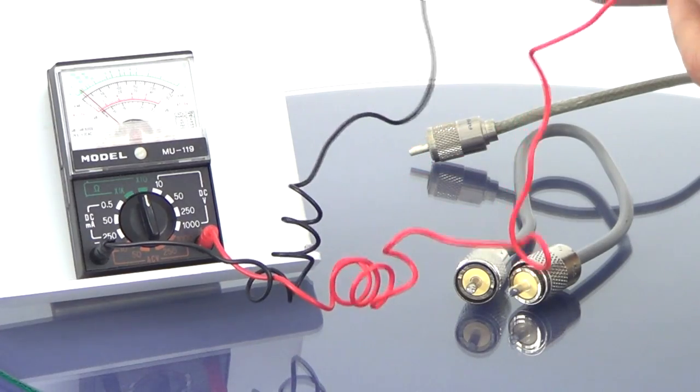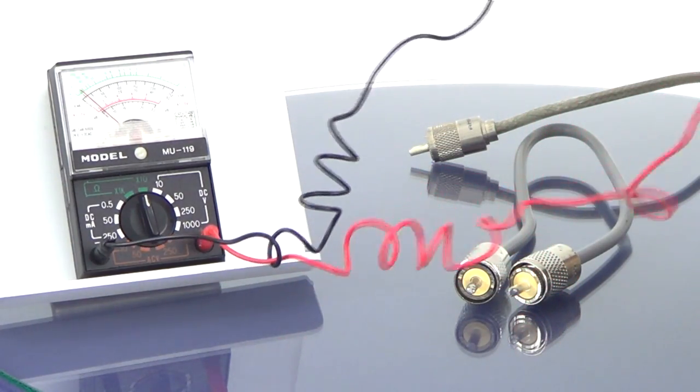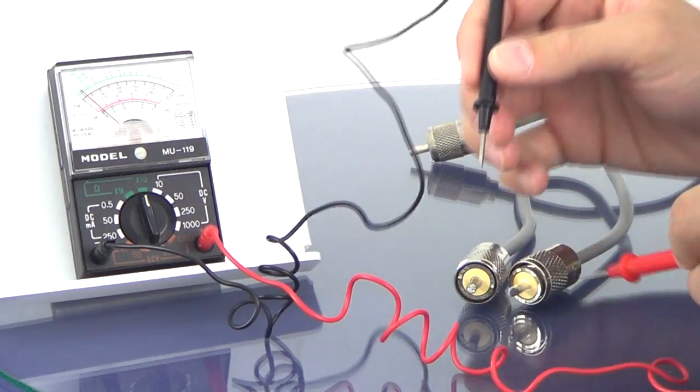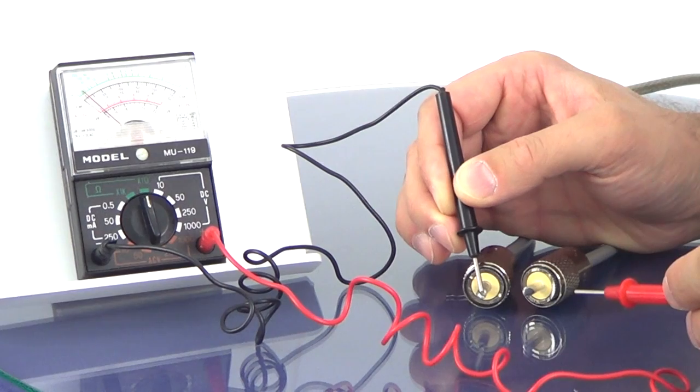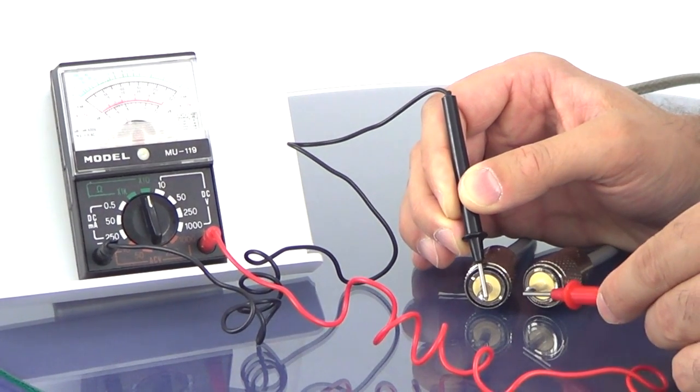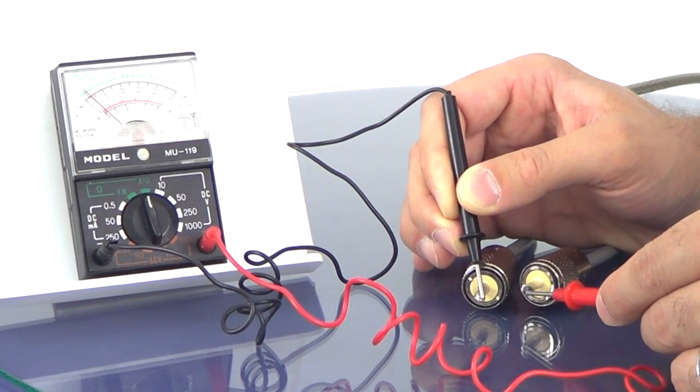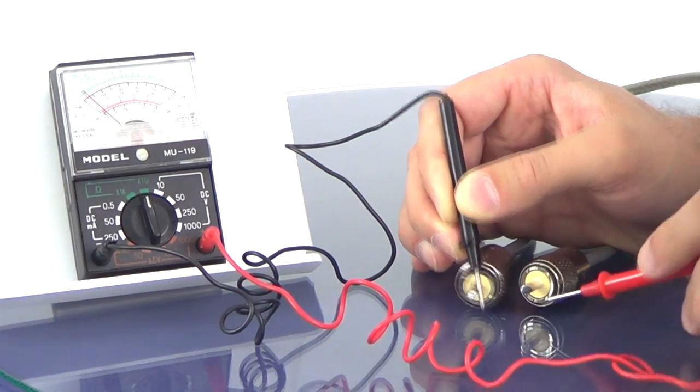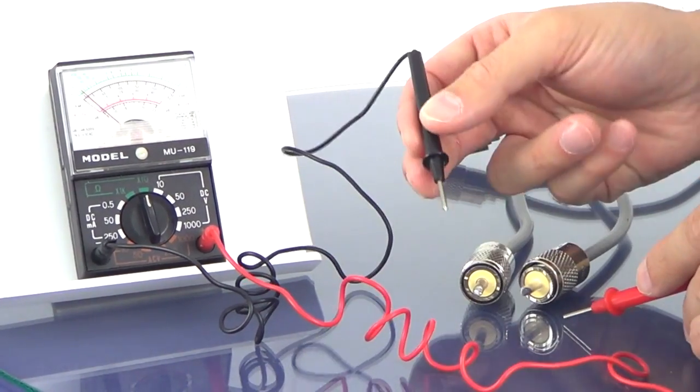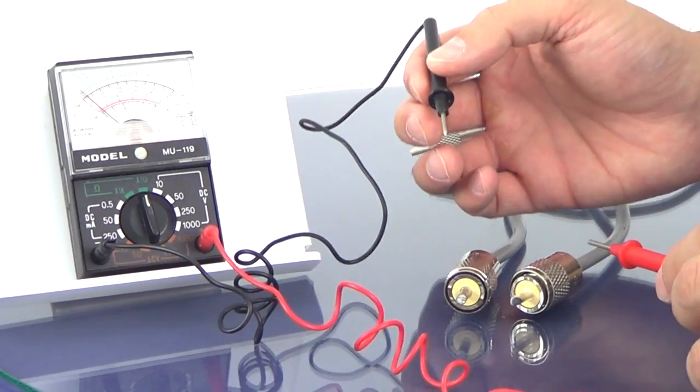So three tests we're going to do. First is the center conductor to center conductor. On either end of the cable you're going to touch the probes to the center conductors. So on one end and then on the other. And you can see the meter goes up indicating that we have good continuity. You want to be careful when you're doing this not to touch the probe to the shield while you're touching the center conductor.